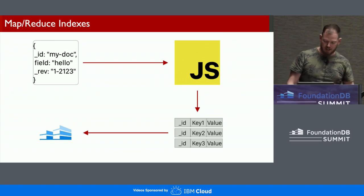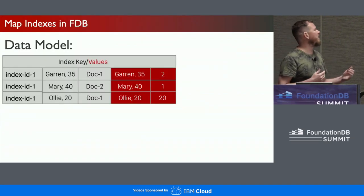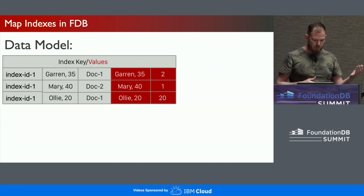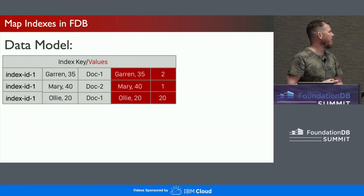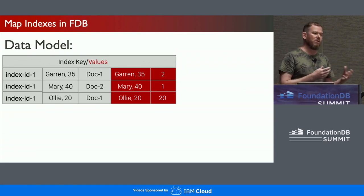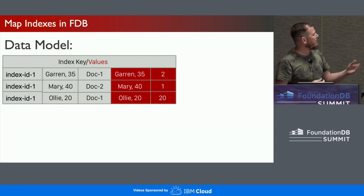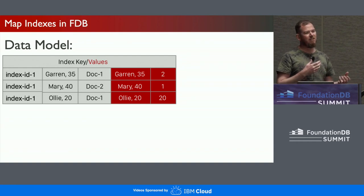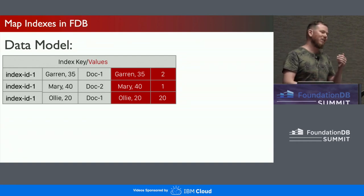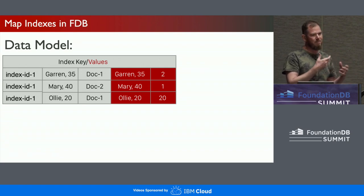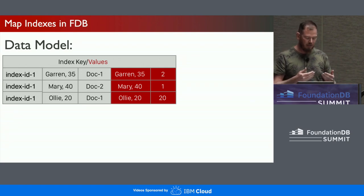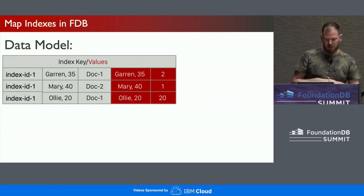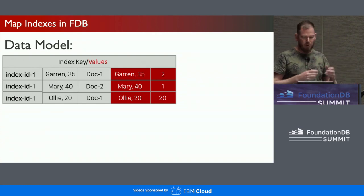What we store in FoundationDB looks like this: we store the index ID first, then the keys — in this case name and age — using the same encoding process described for Mango, and the document ID. On the value side (shown in red), we store the keys again. Once we've encoded the keys for FoundationDB's correct sorting, we can't decode them back to get the exact original keys, so we store those original keys in the value side of FoundationDB along with the value. Every time we do a query, we fetch those values and return both back to the user.